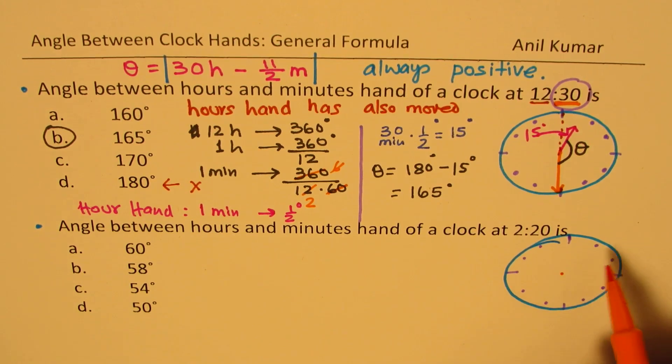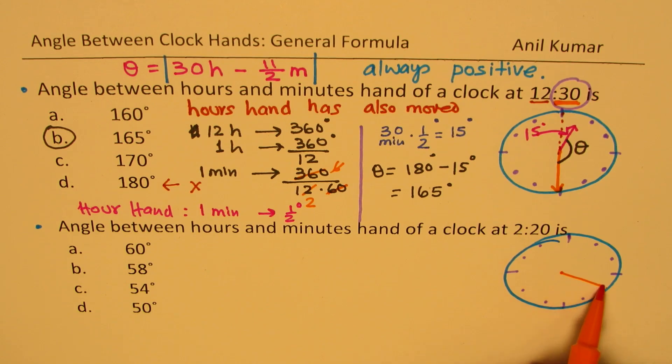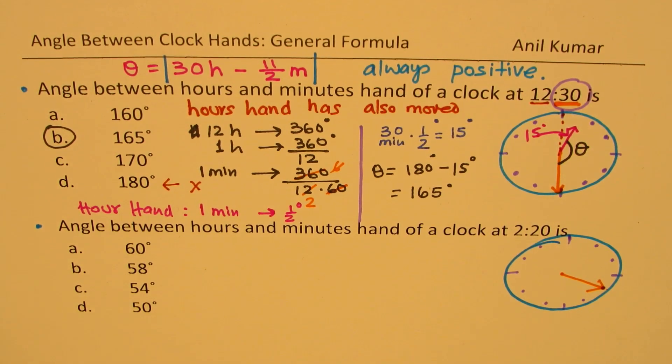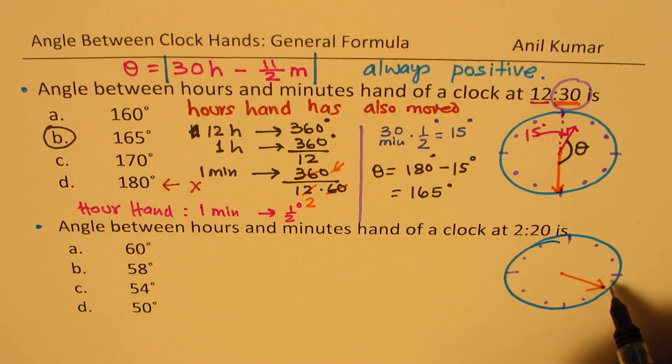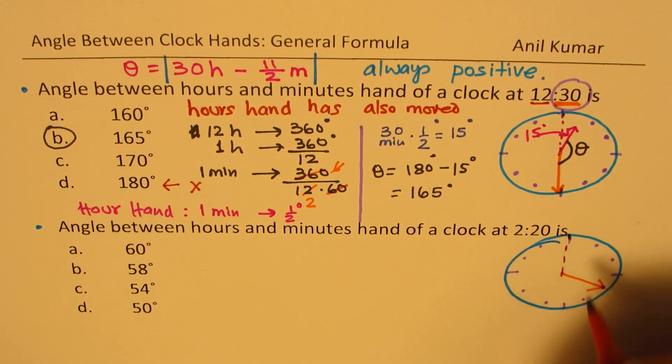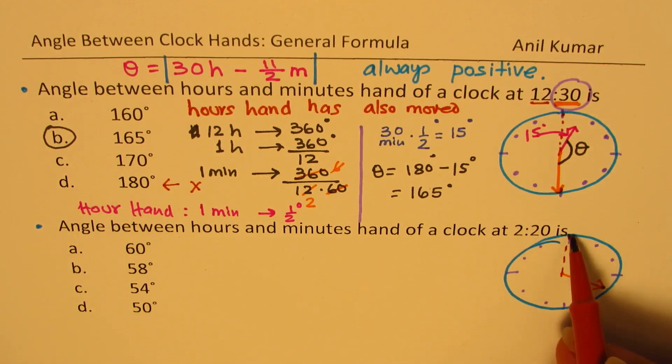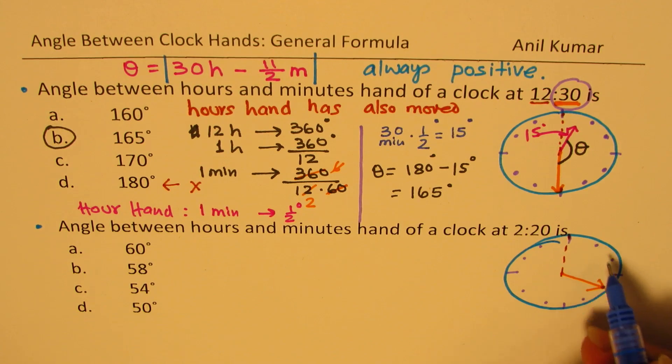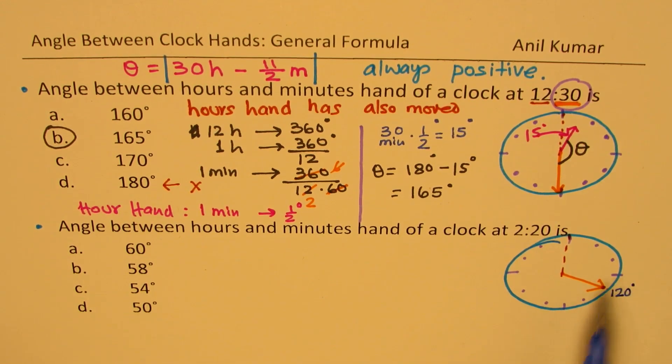We are now looking into 2:20. So 2:20 means 5, 10, 15, 20. So we know that the minutes arm is fixed. And we also know that these are multiples of 30. So the angle which the minutes arm makes with initial position, the top, is basically 30, 60, 90, 120 degrees. 120 degrees.